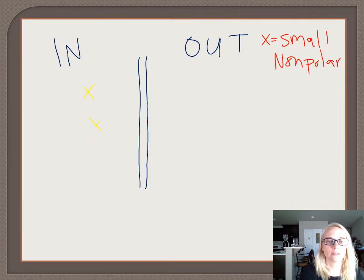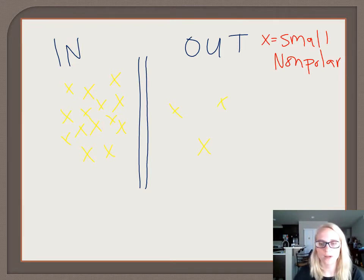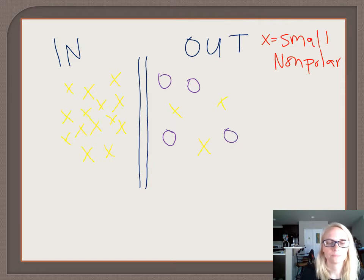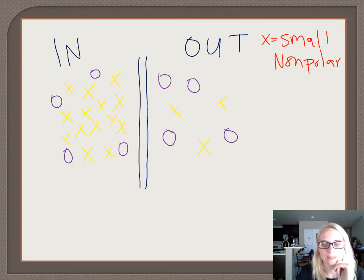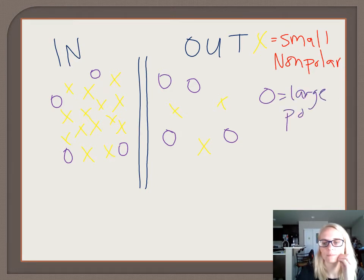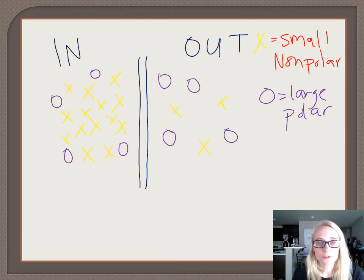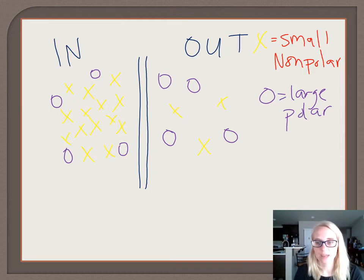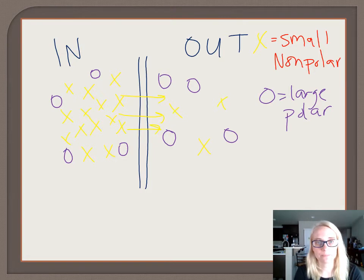What if we had some yellow molecules on one side of the membrane — a lot on one side and just a little on the other? Let's also look at the purple molecule. The yellow X is small and nonpolar; the purple circle is large and polar. For the yellow: is there a concentration gradient? Yes. Will it move? Yes. Can it? Yes — because it's small and nonpolar, and yellow will continue to move down its concentration gradient until it reaches equilibrium.